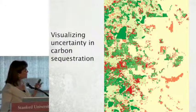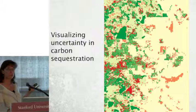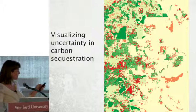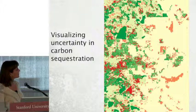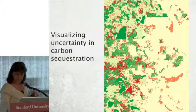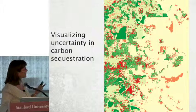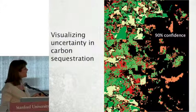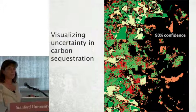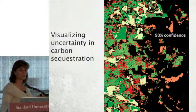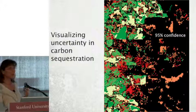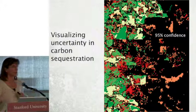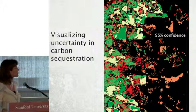Another service Unilever asked about is carbon storage and sequestration. In Brazil, looking at an agricultural extensification scenario, green shows increased carbon storage and sequestration while red shows loss. At the 90% confidence interval the map changes significantly — black areas fall outside the confidence interval. At the 95% confidence interval the picture shifts further. We're figuring out different ways to visualize and show not only the answers but also how certain or uncertain we are in those answers.